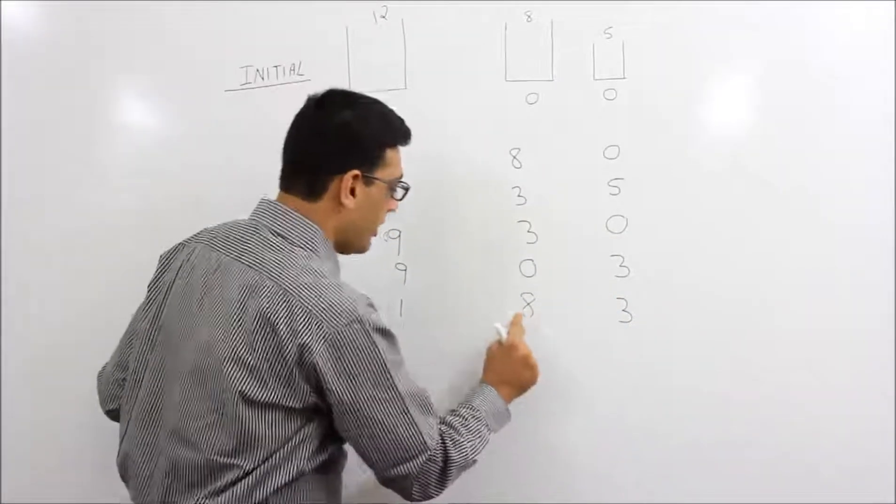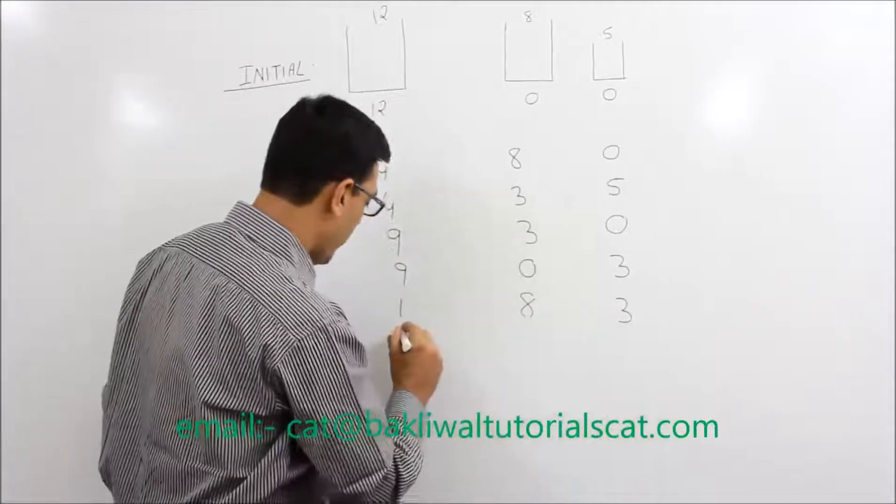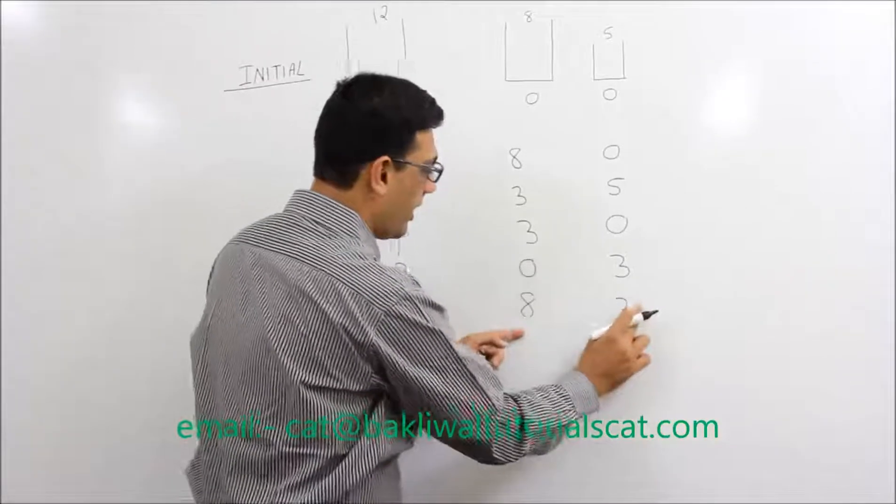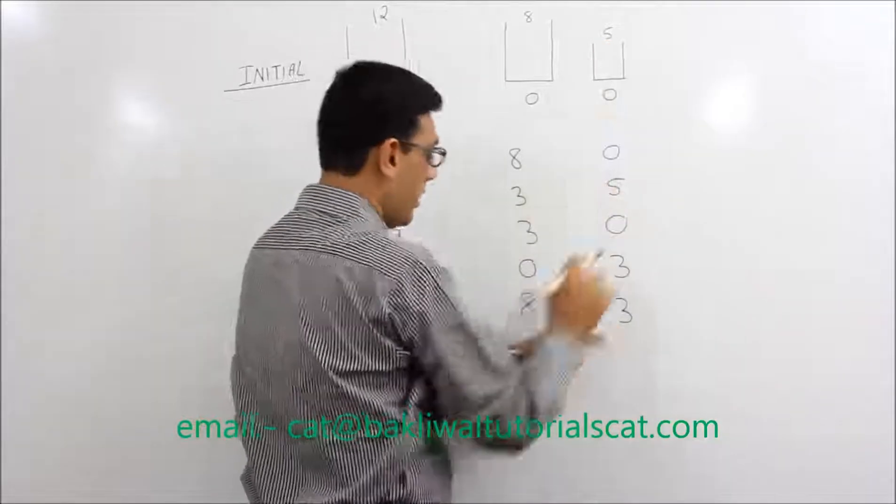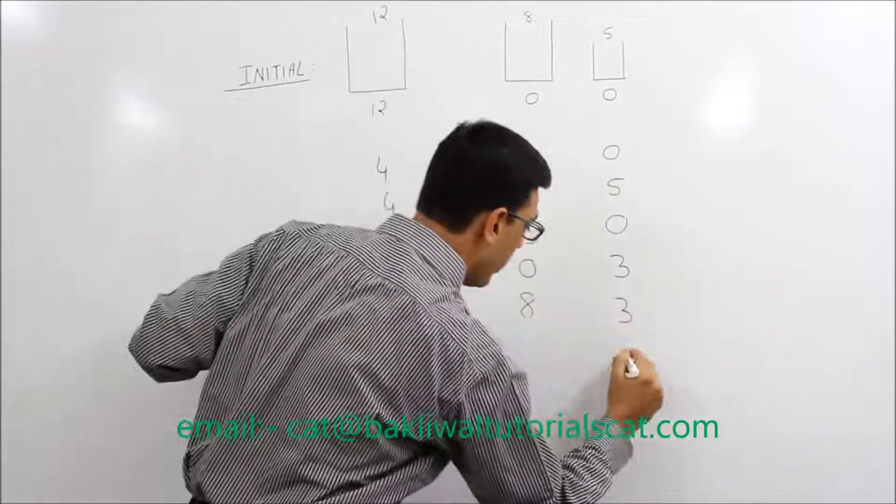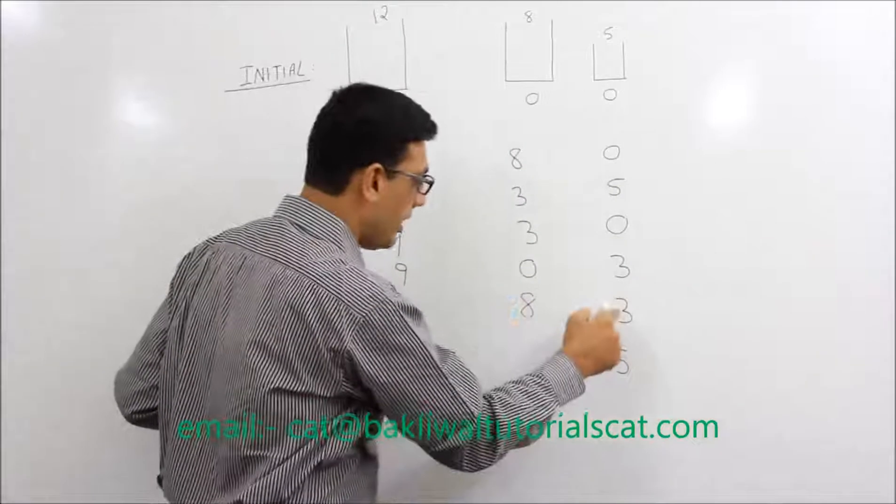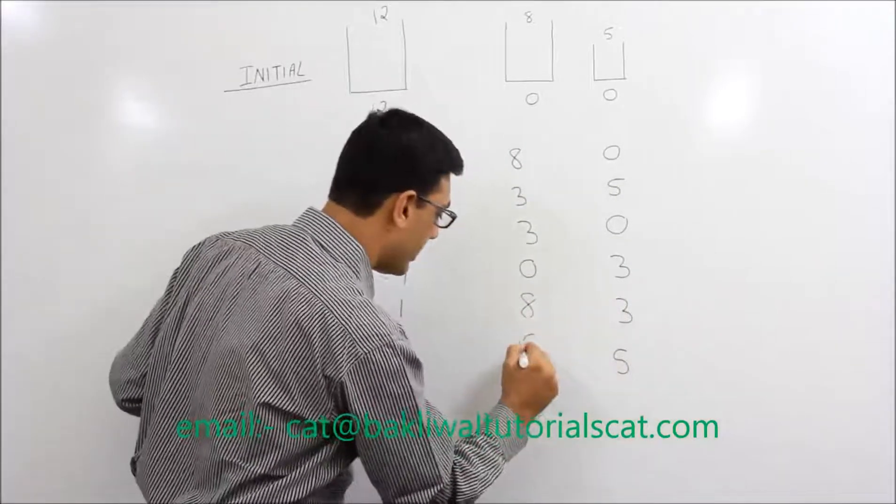Then we put this 8 over here. So we get 1 here. And now when we put over here, already 3 litre is there. The capacity is 5, so it will take 2 more. So it becomes 5. And since 2 litre has gone, it will become 6.